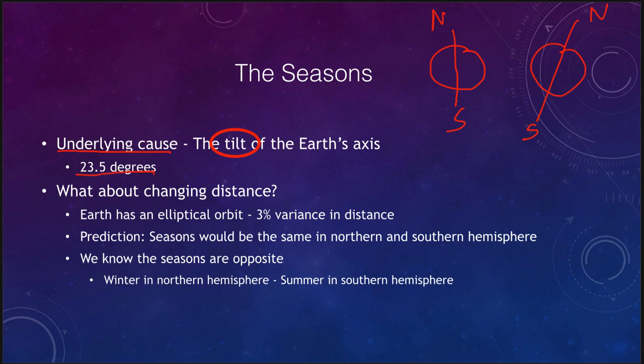If the earth were not tilted, we would have no seasons. If the tilt were zero degrees, the seasons would be the same all year round. If it were tilted significantly more, the seasons would get more and more extreme.